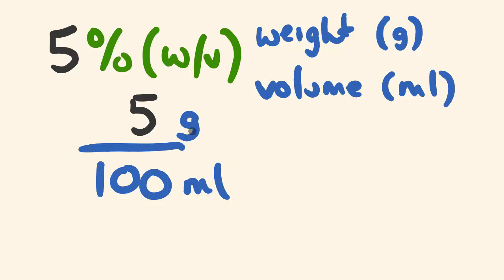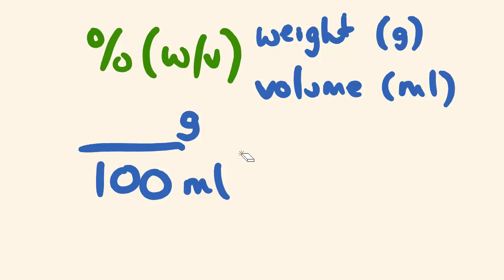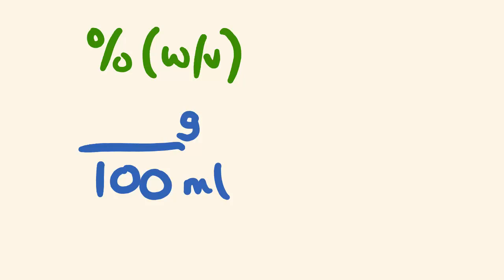And that's the concentration we have here. Quite often you will see concentrations in this sort of format, where we have grams per mil, or milligrams per mil, or milligrams per litre — always going weight per volume. So I'm going to show you now how we can play around with this, and specifically how to express the concentration in milligrams per mil, rather than grams per mil, which is a little bit cumbersome.